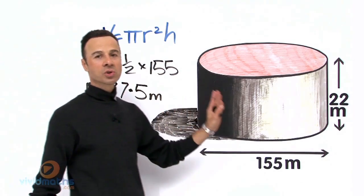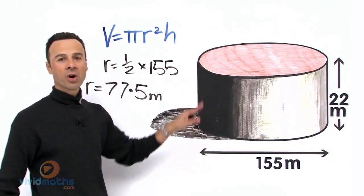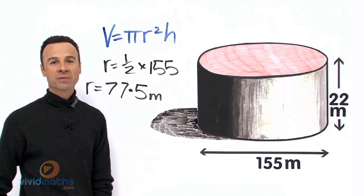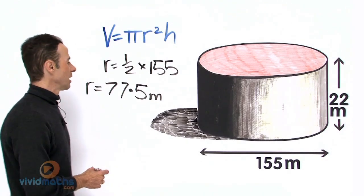Okay, now we have our radius—it's chopped in half. Now we want to work out the area on the top and then multiply by the height, the vertical height of this fuel storage silo. Let's work this out.